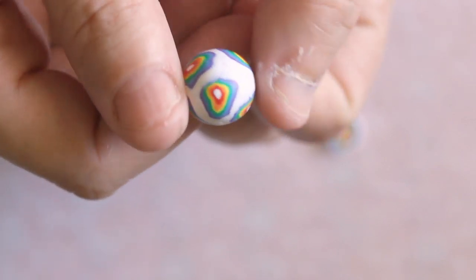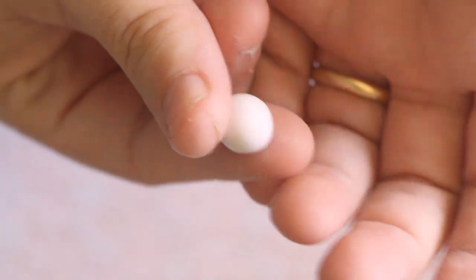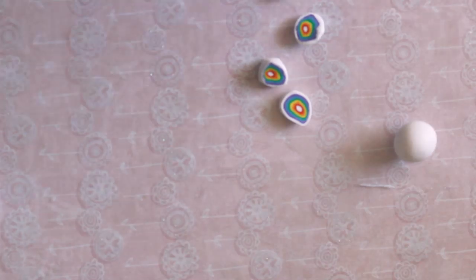Another bead that you can create with this is to get another piece of scrap clay. I like to use the white clay. You're going to roll that into a ball, then you're going to set it aside and then you're going to cut these ones in half.